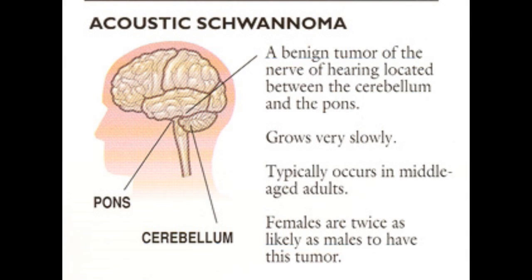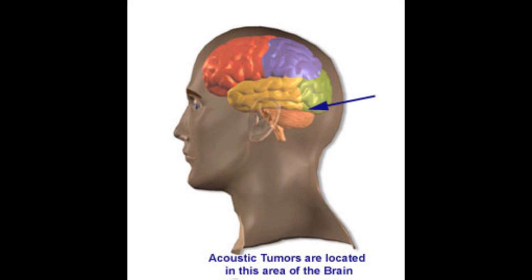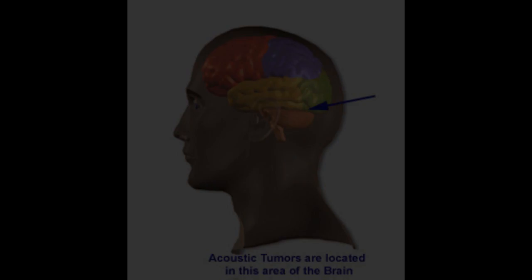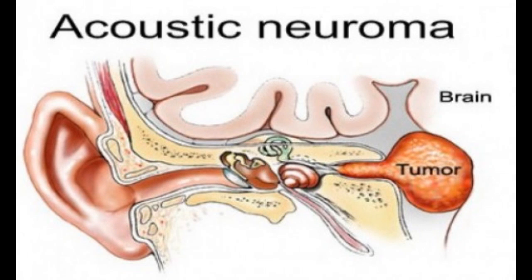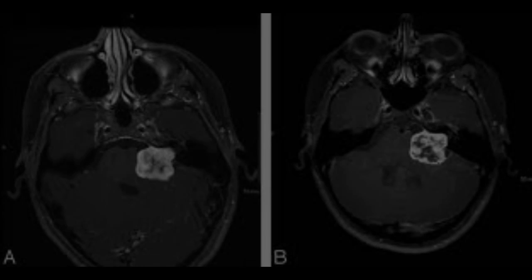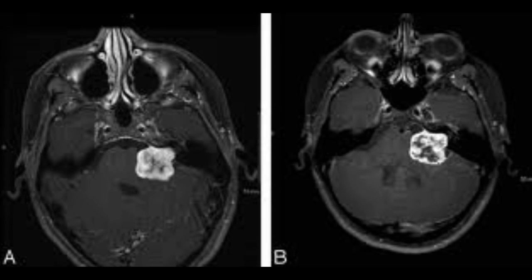Acoustic schwannoma is a slow-growing tumor on the hearing nerve and is typically benign. It is developed by an overproduction of schwann cells that push on the hearing and balance nerves in the inner ear. Acoustic schwannoma has multiple different names such as acoustic neuroma, vestibular schwannoma, neurinoma, and neurilomoma. Symptoms include hearing loss, dizziness, ringing in the ears, facial nerve paralysis, and problems in the brain.